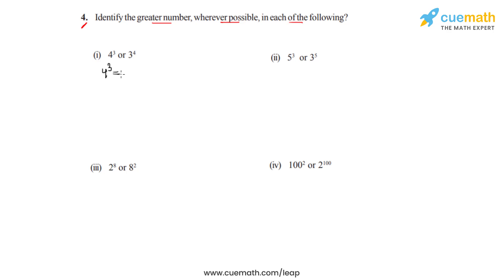We will take 4 raised to 3 first, and its expansion is found by multiplying 4 three times as the power is 3. So we write 4 times 4 times 4. Now 4 fours are 16, and 16 fours are 64. So 64 is the expansion of 4 raised to 3.